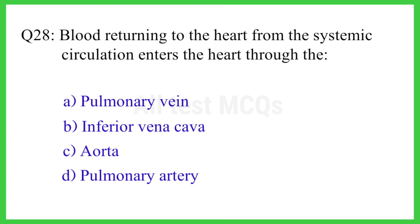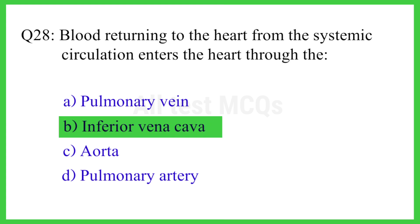Q28. Blood returning to the heart from the systemic circulation enters the heart through the right answer, option B. Inferior vena cava.